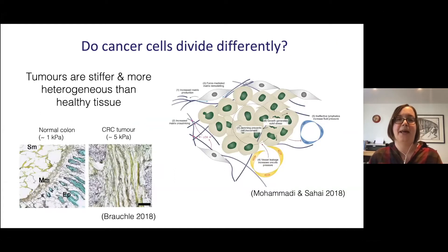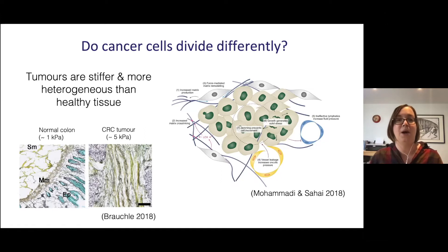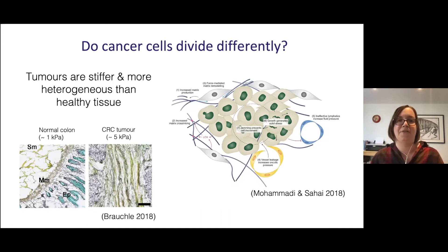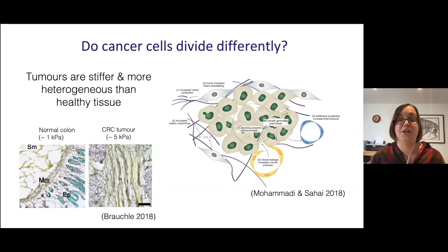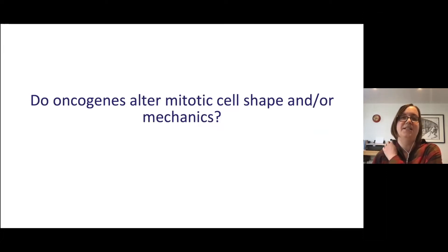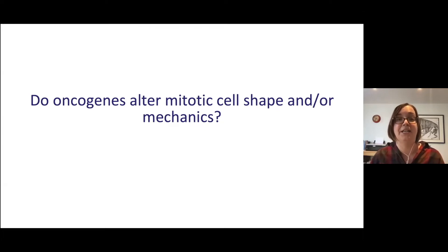We've been wondering whether cancer cells perform mitotic rounding differently from non-transformed cells. Anecdotally, cancer cell lines tend to round up more in mitosis. Cancer cells also divide in very different environments — tumours are often characterised by abundant extracellular matrix and an extremely stiff microenvironment. We hypothesised that mitotic rounding might help cancer cells proliferate in stiff environments. Rather than just comparing cancer with non-cancer lines, we specifically asked whether oncogenic signalling pathways can directly affect cell shape during mitosis.